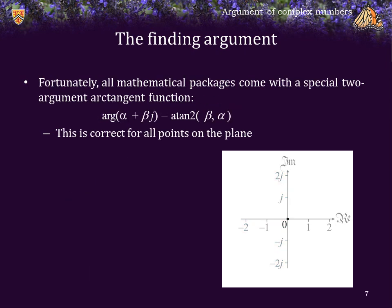Fortunately, all mathematical packages come with a two-argument arctangent function, so we can always find the argument of α + βj by simply calling arctan2(β, α). This will return the correct argument in terms of radians for all points on the complex plane.